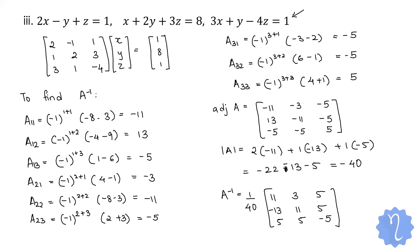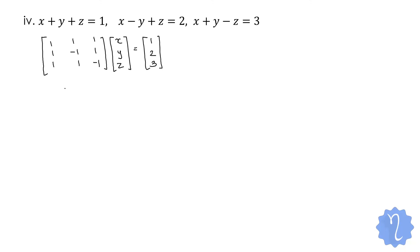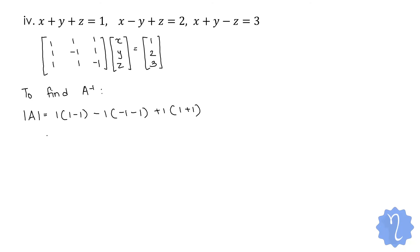Now let us do the last question. We have x + y + z = 1, x − y + z = 2, and x + y − z = 3. First, write it in matrix form. We find the determinant of A, which equals 4, so A inverse exists.